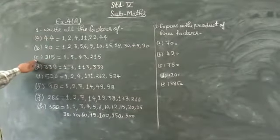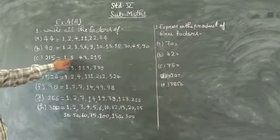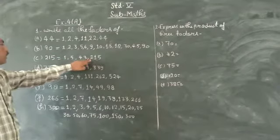Next, part number C, 215. The factors are: 1, 5, 43, 215.